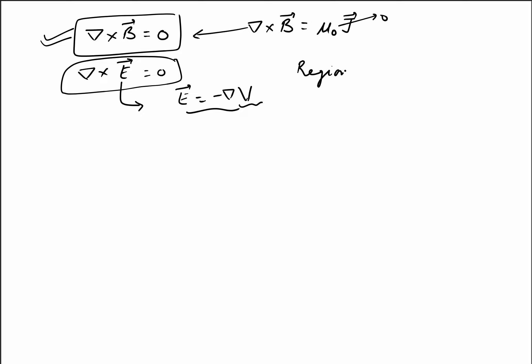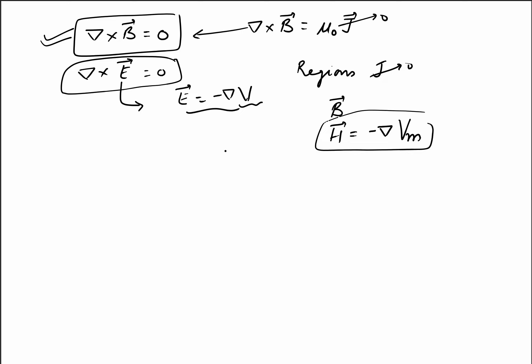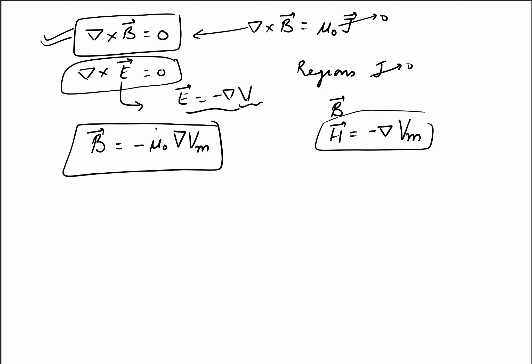Similarly, for regions where there is no current density, we can represent the magnetic flux density — or magnetic field intensity — by the gradient of some scalar quantity called the magnetic scalar potential. We can write B equals minus mu naught times the gradient of the magnetic scalar potential. Note that this is only a special case, valid whenever there are no sources of current density.